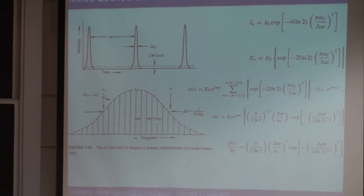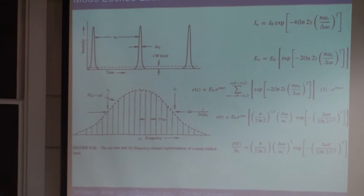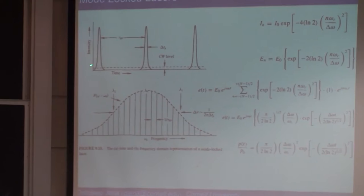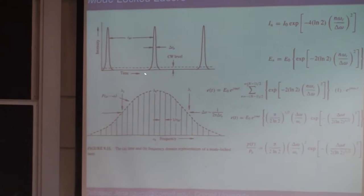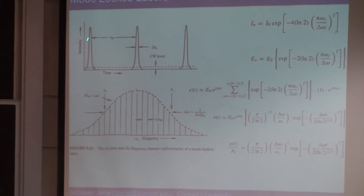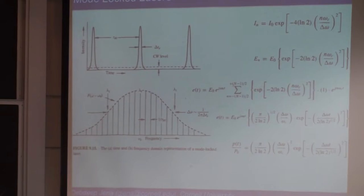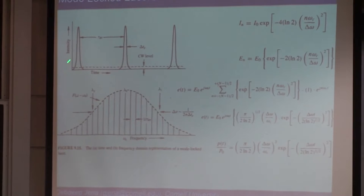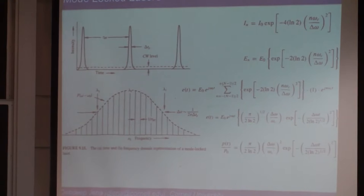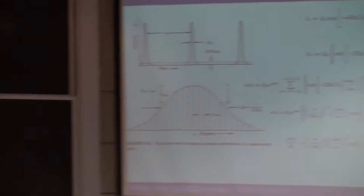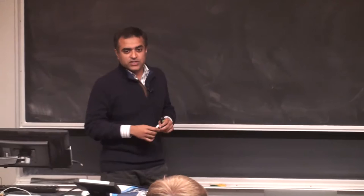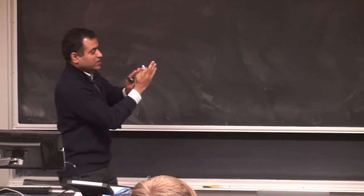There are pros and cons. In the mode-locked laser, what we're doing is taking the CW level and bunching it up into very short pulses in the time domain. So the total energy is not too different from CW. Whereas in the Q-switched laser, you get a lot more energy — not power, but energy integrated over the whole pulse — because you go way out of the threshold required for population inversion. That's why you can dump a lot more energy in one pulse, but you cannot repeat too often.